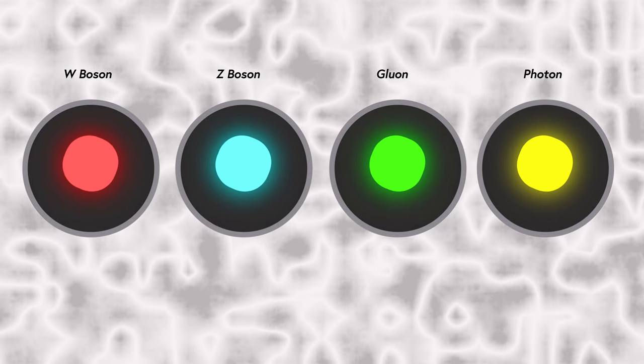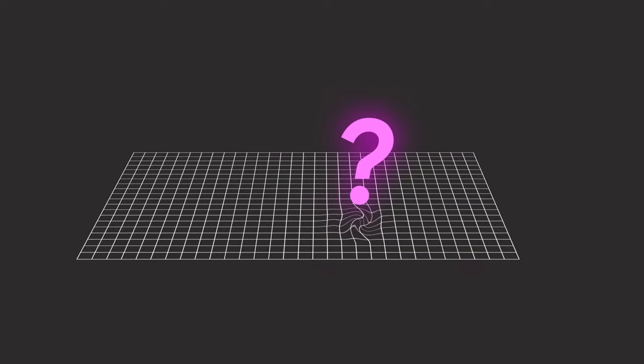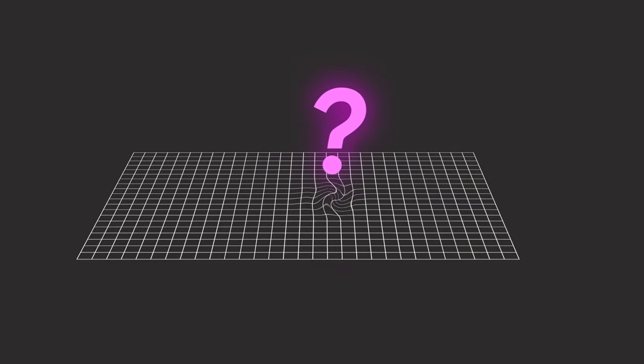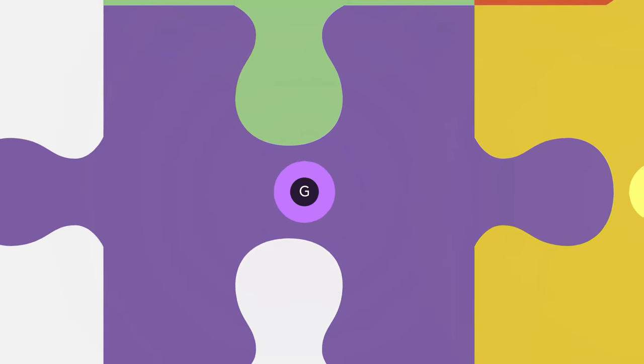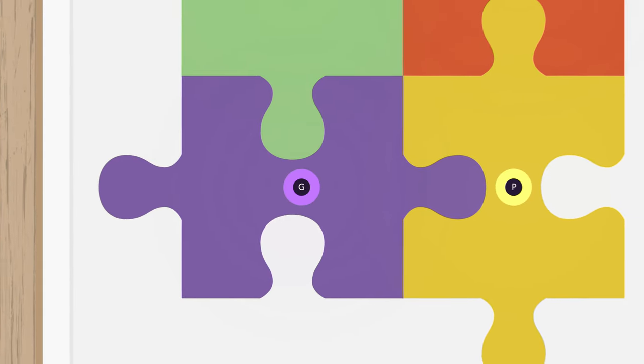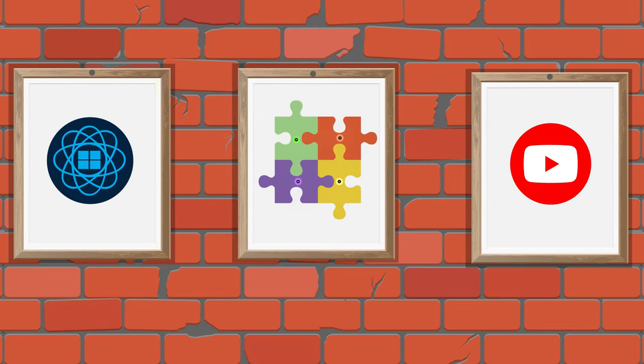However, there is one gaping hole. The standard model cannot explain gravity and why it is so much weaker than the other three forces. That is where the graviton hypothesis comes in. By offering a potential explanation of gravity on a subatomic level, we get a big missing piece of the standard model puzzle.